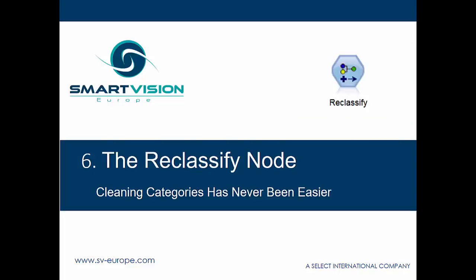Number six on the list is the Reclassify node. It's a very well-established node used widely within SPSS Modeler by all sorts of different users at different levels, but I don't think people really appreciate just how good it is at cleaning data when it's got messy categories. It's just really, really powerful at that. So let's have a look at how that works.